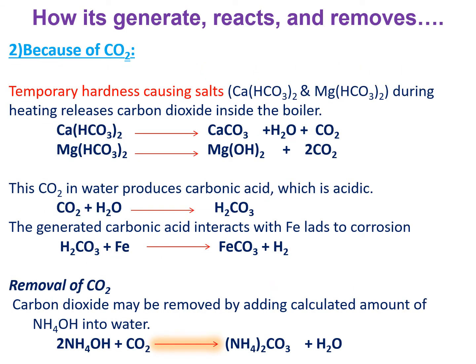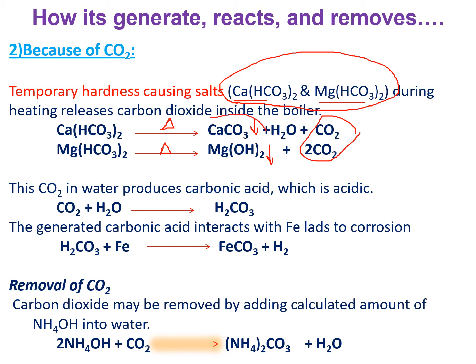Next is CO2: how is it generated in the water and how does it interact with the boiler material? If the boiler feed water contains temporary hardness-causing salts — calcium bicarbonate and magnesium bicarbonate — during steam generation at high temperatures, these salts undergo decomposition. Calcium bicarbonate precipitates as calcium carbonate and magnesium bicarbonate precipitates as magnesium hydroxide, but in this process CO2 gas is released. Because of this, scale or sludge is formed, and because of the CO2 gas, boiler corrosion occurs.